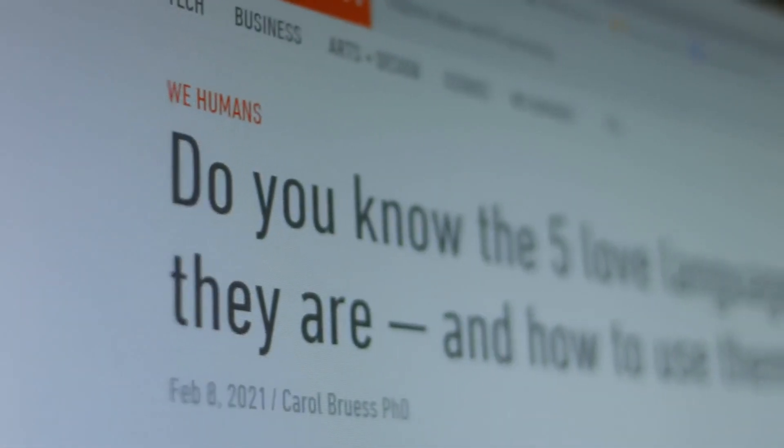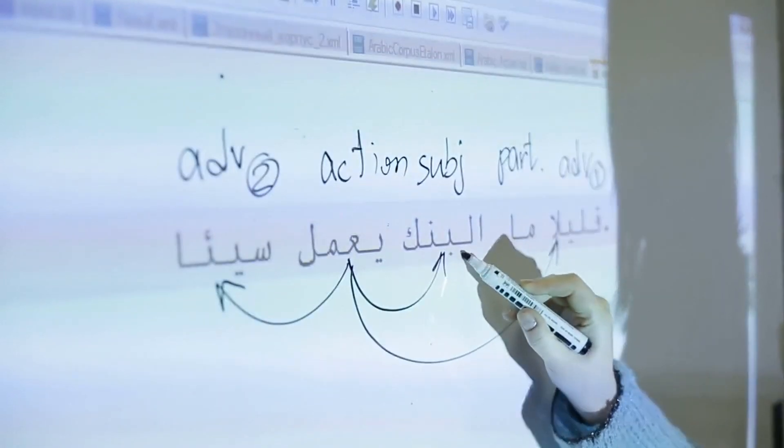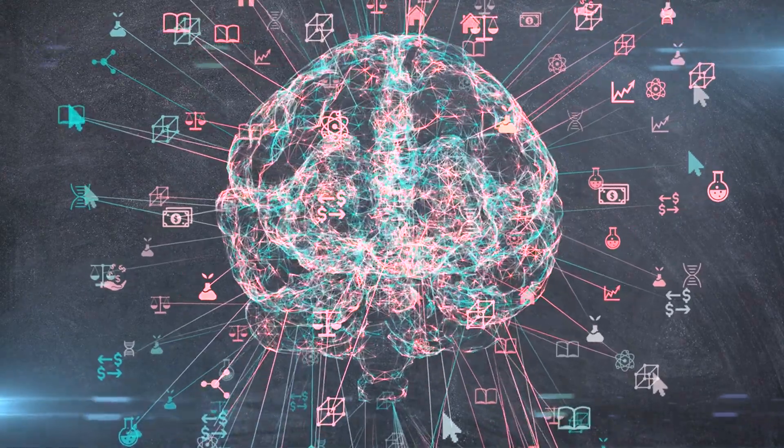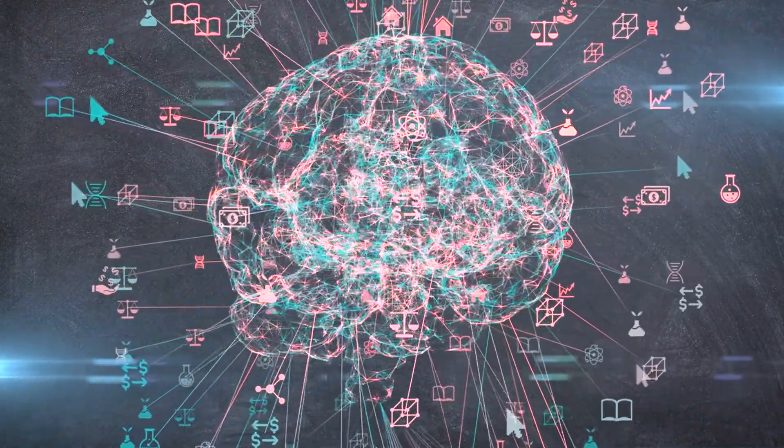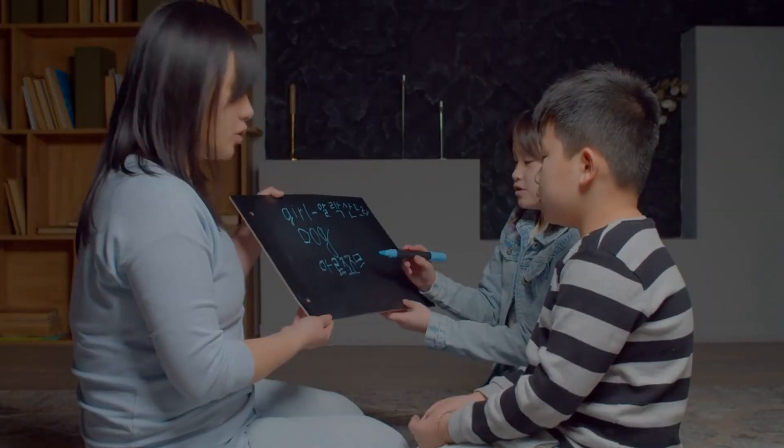Interestingly, there's no hard limit to the number of languages one can learn. There are documented cases of polyglots who have managed to learn and speak more than 50 languages. This suggests that our brains have an incredible capacity for language learning, a capacity that we are only beginning to understand.